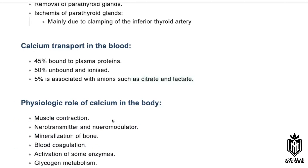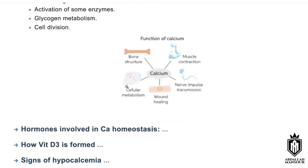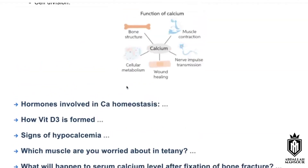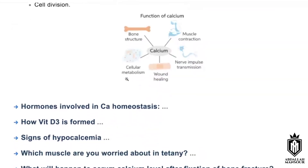You can classify it starting with muscles, bones, nerves, and blood — such as glycogen metabolism and cells as well. Activation of some enzymes. But if you go systematically — muscles, bones, nerves, and then blood — it'll be easier to remember.